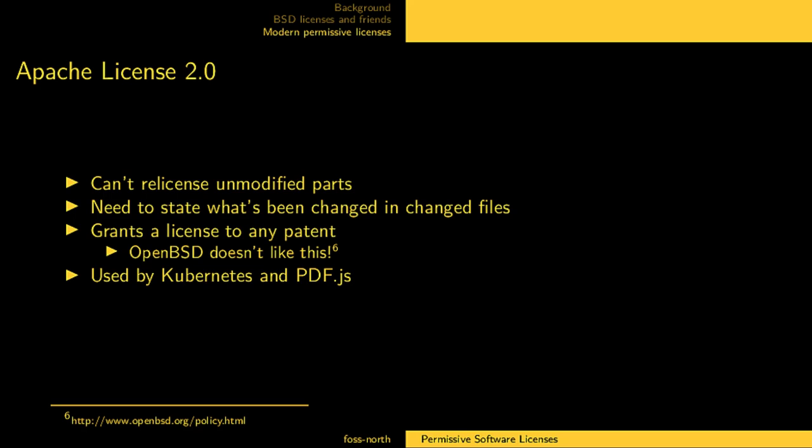So you need to touch all the files for that to apply. And modification has to do with not just changing one word somewhere, but actually changing what it does. Some notable users of the Apache license, apart from the Apache Foundation itself, are Kubernetes and PDF.js — the PDF reader inside Mozilla Firefox.